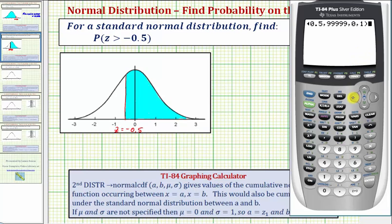If we scroll to the far left, notice how we have normal CDF, and then we have the lower bound z-score, the upper bound z-score, mu and sigma.